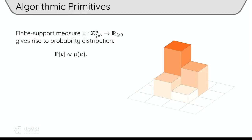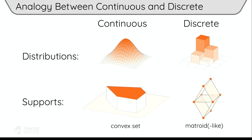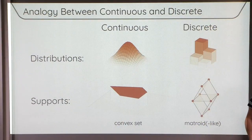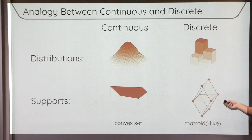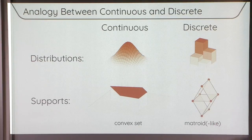The purpose of this talk is to find an analogous class in the discrete world. We still want to be able to do sampling, counting, and optimization efficiently. On the top I've represented distributions as density functions — continuous and discrete. We also want the analogy to work for the support sets. In the continuous world, the support of a log-concave function is always a convex set, and conversely, there is a log-concave distribution (the indicator) whose support is any convex set. I'm going to argue that the analog of convex sets in the discrete world should be matroids or matroid-like objects.